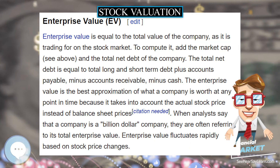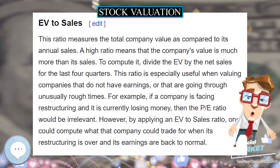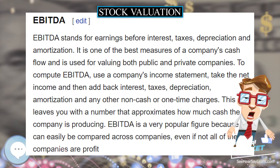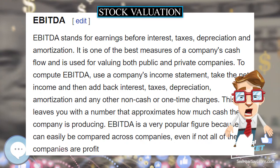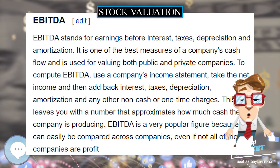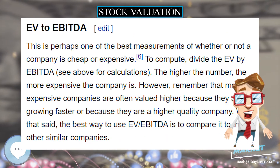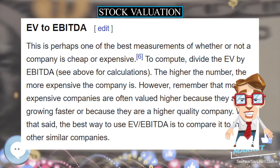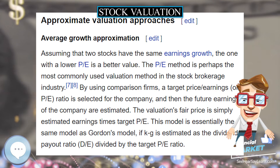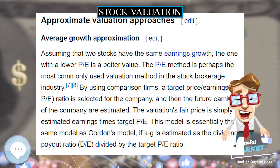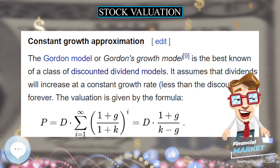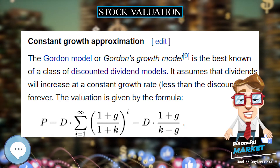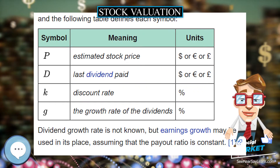Discounted Cash Flow. The discounted cash flow (DCF) method involves discounting of the profits, dividends, earnings, or cash flows that the stock will bring to the stockholder in the foreseeable future, and a final value on disposal. The discounted rate normally includes a risk premium which is commonly based on the capital asset pricing model. For discussion of the mechanics, see valuation using discounted cash flows.